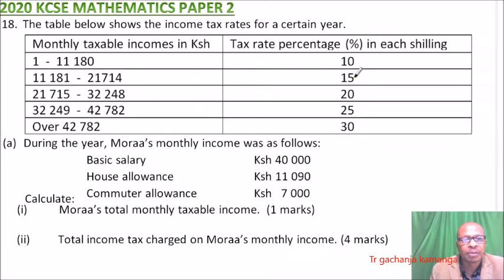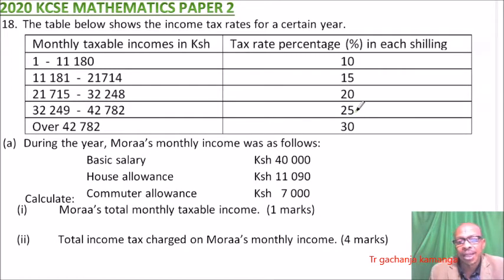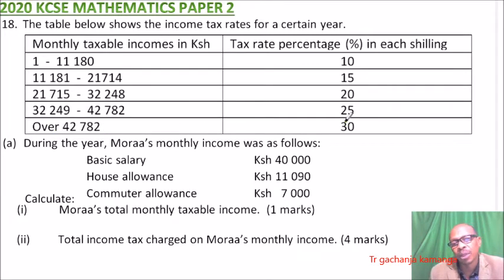21,715 to 32,248 is taxed at 20 percent. Then 32,249 to 42,782 is charged at 25 percent. Anything over 42,782 is taxed at the rate of 30 percent.